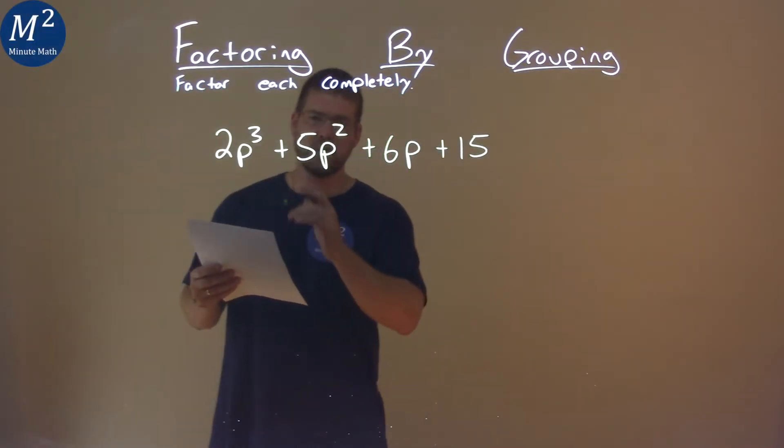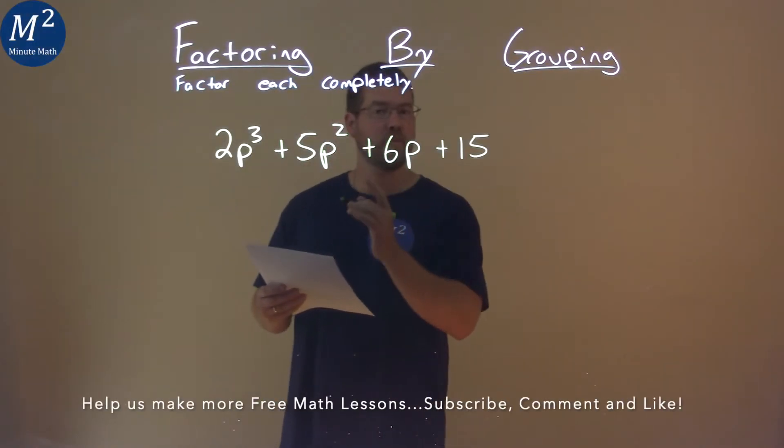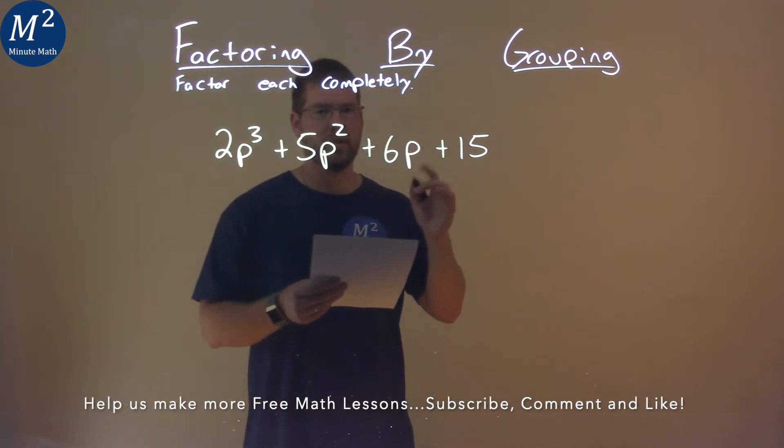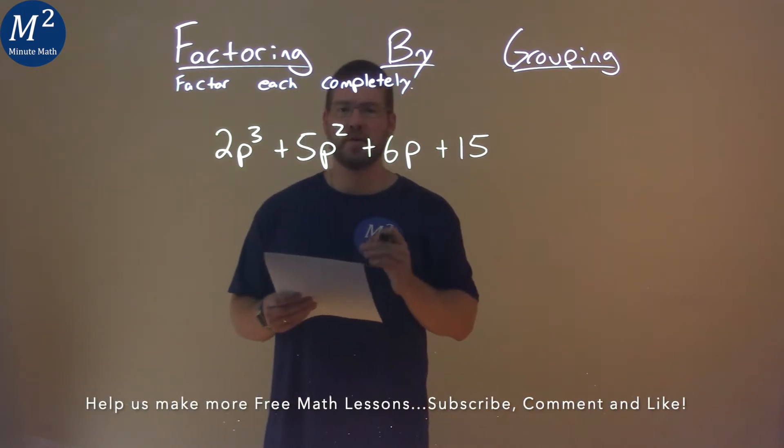We're given this problem right here, 2p to the third power plus 5p squared plus 6p plus 15, and we need to factor this completely.